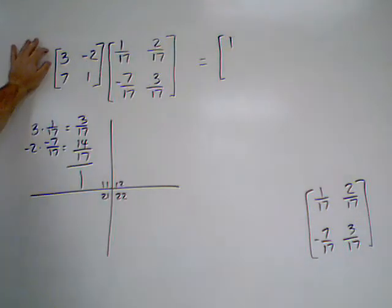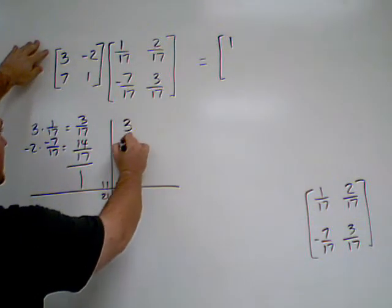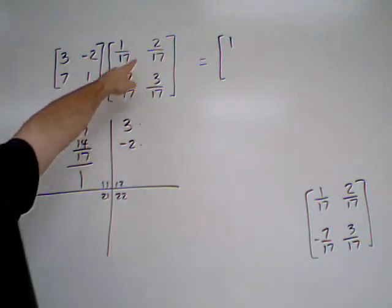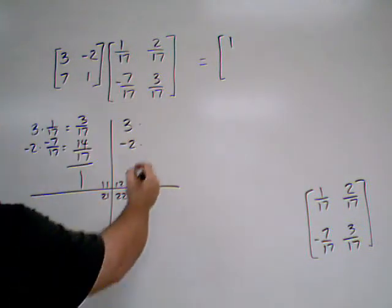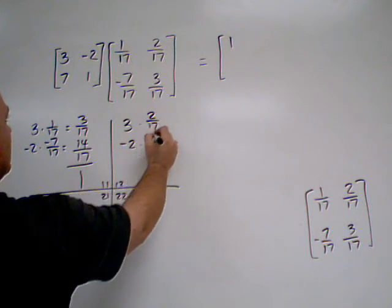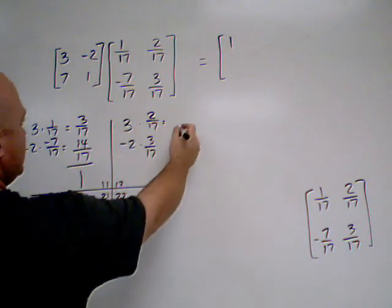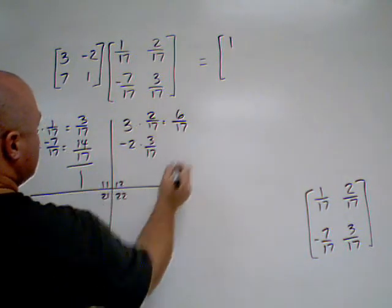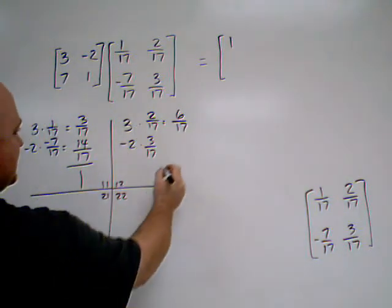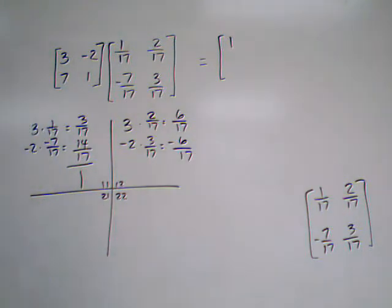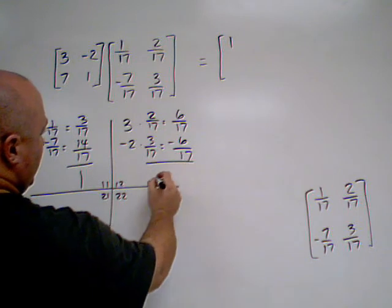Next, we're still working with row 1, so 3 and negative 2. But, we're now at column 2, so 2 over 17 and 3 over 17. 3 times 2 over 17 gives us 6 seventeenths. Negative 2 times 3 seventeenths gives us negative 6 seventeenths. When we add these together, we get 0.